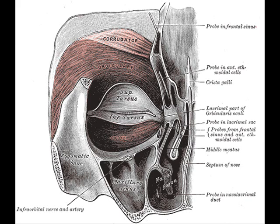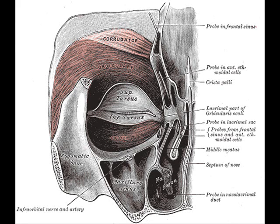The lacrimal part, or tensor tarsi, is a small, thin muscle, about 6 mm in breadth and 12 mm in length, situated behind the medial palpebral ligament and lacrimal sac. It arises from the posterior crest and adjacent part of the orbital surface of the lacrimal bone, and passing behind the lacrimal sac, divides into two slips, upper and lower, which are inserted into the superior and inferior tarsi medial to the puncta lacrimalia. Occasionally it is very indistinct.